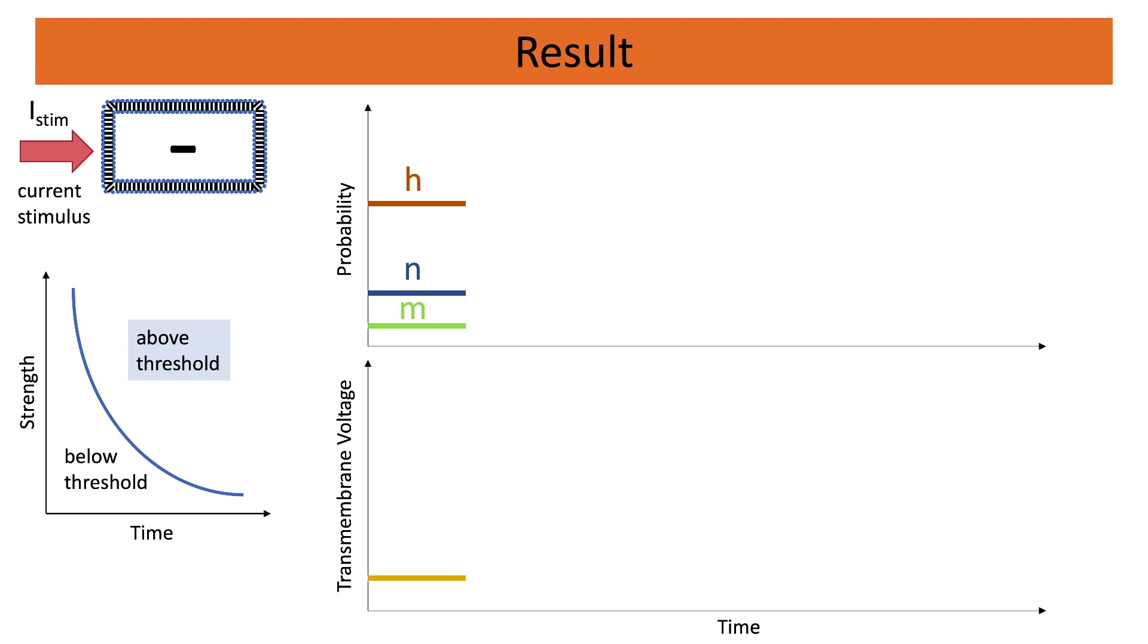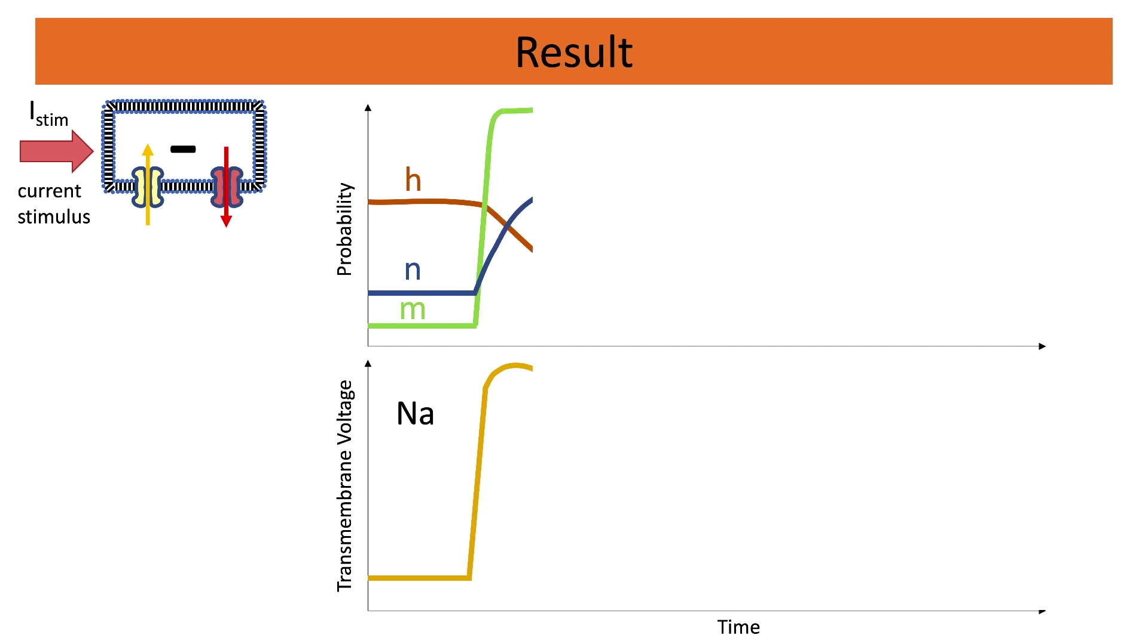If the stimulus was given correctly we will see a change in VM and that introduces a change in the gates. We see that the M gates open rapidly, and while the H gates slowly start to close there are still enough sodium gates open for sodium to flow from the extra to the intracellular.